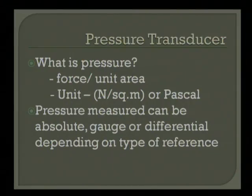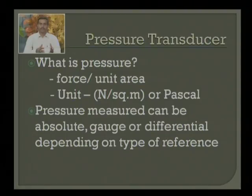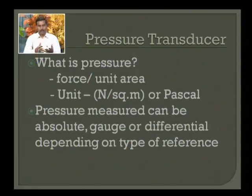How can one define pressure? According to our physics studies, we know that pressure is force per unit area, defined in units of newton per meter square or pascal. This is what we have as primary information about pressure. Pressure is generated when force is applied on a certain object with a certain area of cross section.